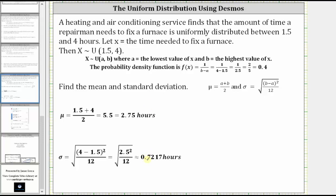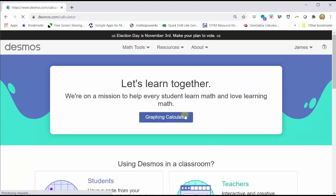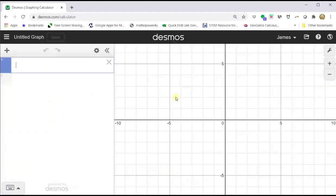Let's actually begin by graphing the uniform distribution. To do this, go to desmos.com. Click graphing calculator. Open the desmos keypad by clicking the show keypad button in the lower left-hand corner.